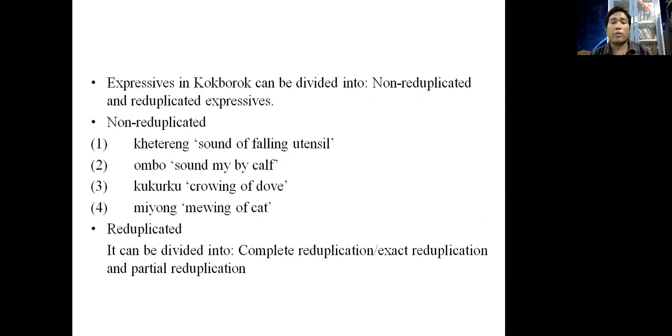Expressives in Kokhbarok can be divided into non-reduplicated and reduplicated expressives. Non-reduplicated expressives are single roots. For example, keterang 'sound of falling utensil', ombo 'sound made by calf', kukurku 'crowing of dove', and myong 'mewing of cat'.